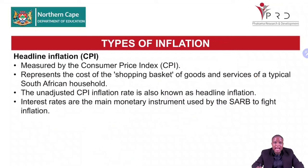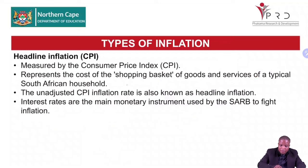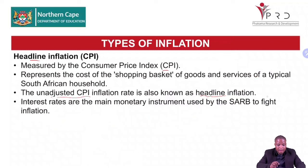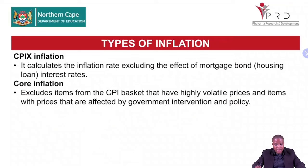Now let's look at the types of inflation. The first type is headline inflation. It is measured by the Consumer Price Index — also known as the unadjusted CPI. It represents the cost of the shopping basket of goods and services typical of a typical South African household. Interest rates are the main monetary instrument used by the Reserve Bank to tighten inflation.